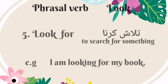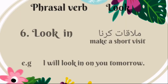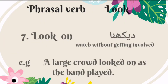The fifth phrasal verb of look is 'look for.' It means to search for something — Urdu mein is ka matlab hai talash karna. For example: I am looking for my book. The sixth phrasal verb is 'look in.' It means make a short visit — Urdu mein is ka matlab hai mulaqat karna. For example: I will look in on you tomorrow. The seventh phrasal verb is 'look on.' It means watch without getting involved — Urdu mein is ka matlab hai dekhna. For example: a large crowd looked on as the band played.